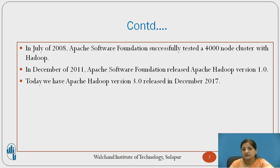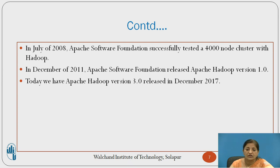In 2008, Apache Software Foundation successfully tested Hadoop to run on 4000-node clusters. In 2011, Apache Software Foundation released Apache Hadoop version 1.0, and today we have Apache Hadoop version 3.0, which was released in December 2017.